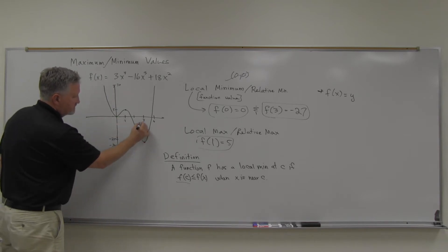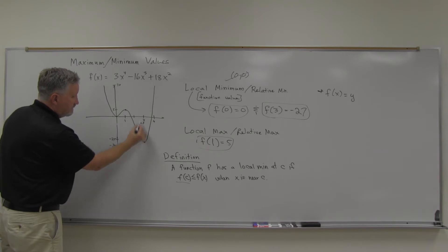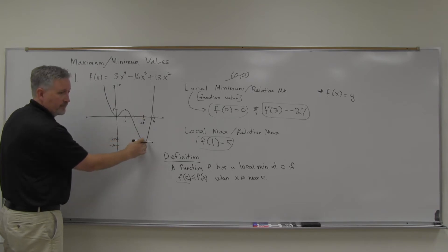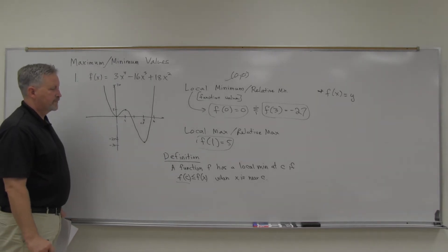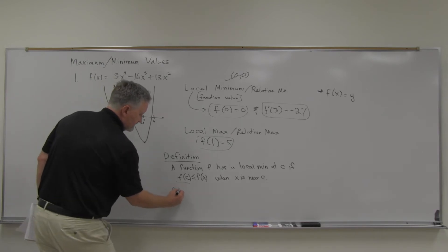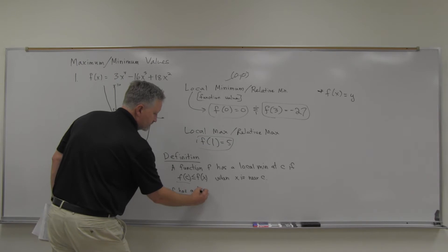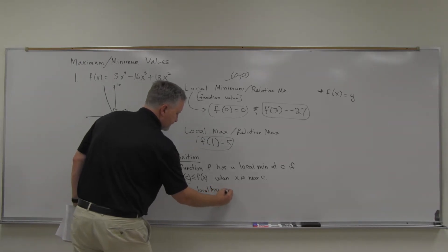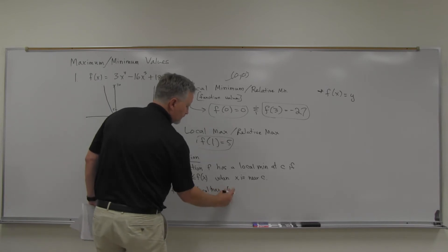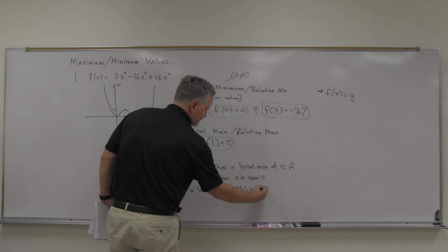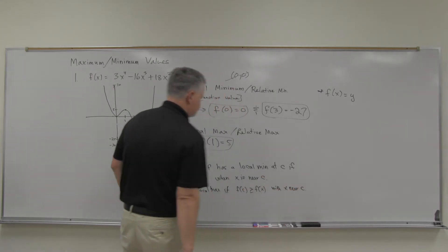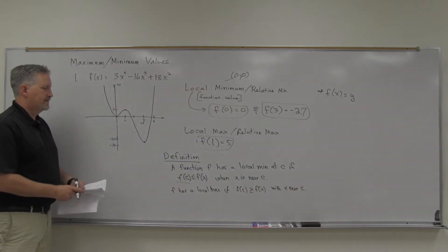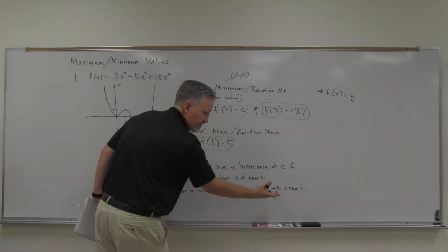So you're just looking at this value — this is our c value. f of 3 is less than f of 2.9 or f of 3.1; those points are around it. That's what the definition looks like for local min. And then, of course, f has a local max if f of c is greater than or equal to f of x with x near c — the function value is greater than the ones around it.